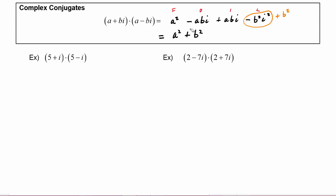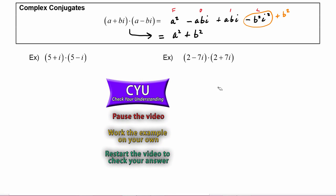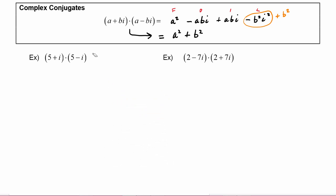Rather than going through the full FOIL step, we can go directly to this result. Let's try that on these two problems — pause the video and try them, then restart to check your answer. In the first one we have (5 + i)(5 - i). Using the complex conjugate result, that's five squared plus the coefficient of i squared — the coefficient is 1 — so this is going to be twenty-six.